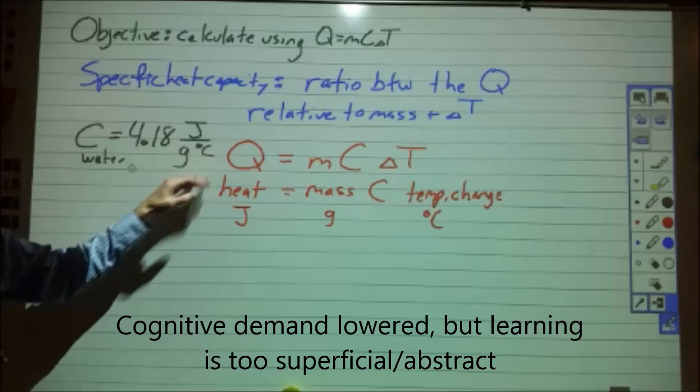Here we see the cognitive demand get lowered a little bit where we start to move more slowly. The problem is that everything is too abstract for the students to take anything away. Heat is linked up with joules, so students will learn to identify joules with Q, but they won't necessarily know what either one is — same with mass and temperature. We're again robbing them of all the thinking they can do by presenting this in too simple a fashion.